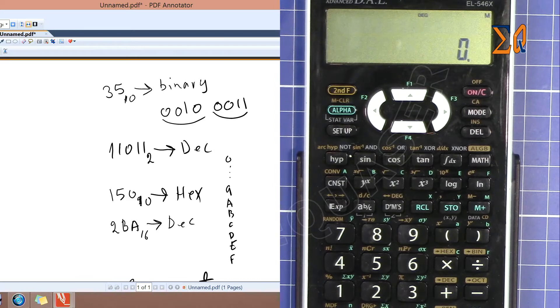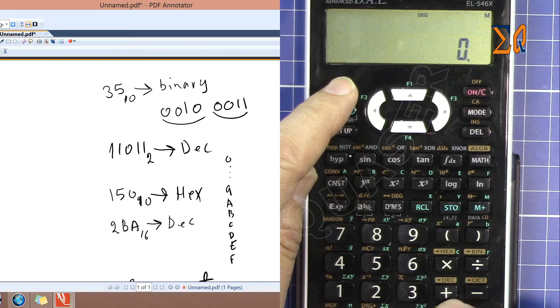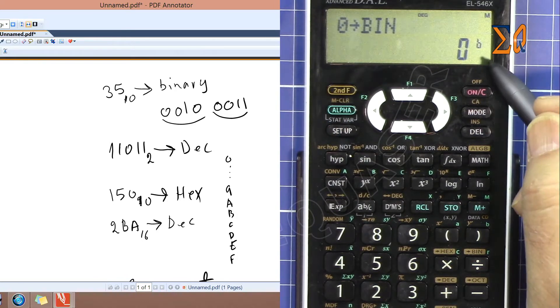Now let's say you want to convert this one one zero one one - the subscript two means base two which is binary - to decimal. First, let's change the calculator to binary. Plus second function, bin. Now we are in binary.